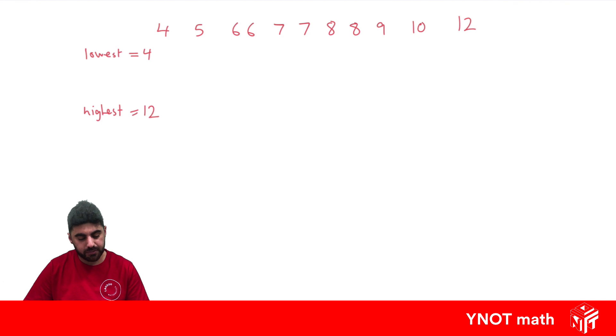So that means the middle one is going to have five on each side. So 1, 2, 3, 4, 5. So there's our middle, our median right there, which another name for remember is Q2. So Q2 is 7.